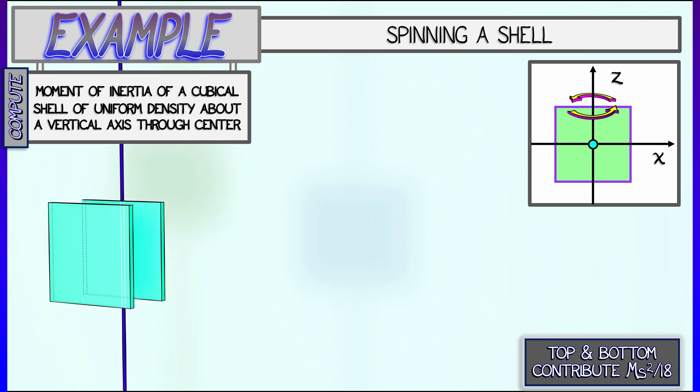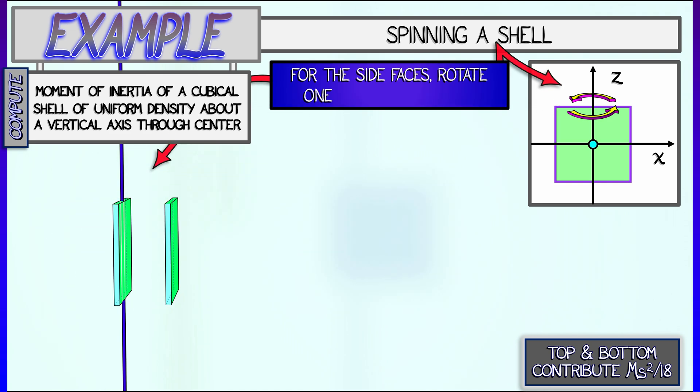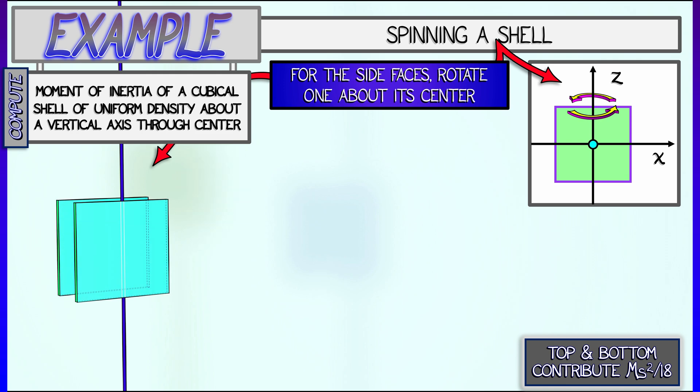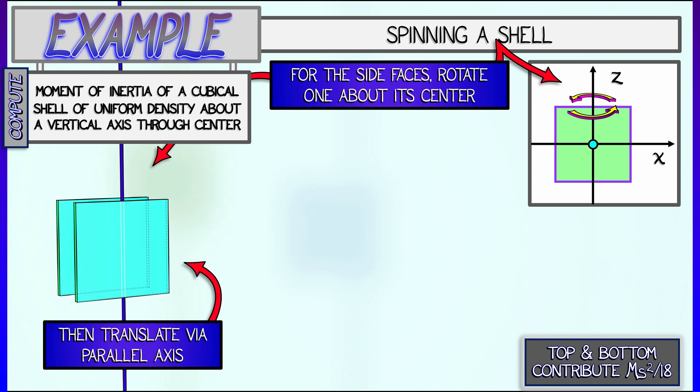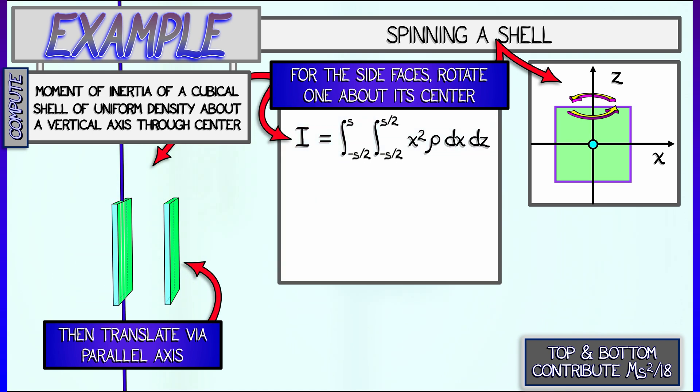That's the top and the bottom. Let's work with the sides now. Remember, our plan is to compute the moment of inertia about a central axis and then do parallel translation. Let's work in the x, z plane.